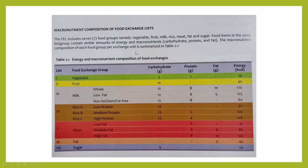Next is the macronutrient composition of the food exchange list. Our food exchange list includes the 7 food groups: vegetables, fruit, milk, rice, meat, fat, and sugar. For the vegetable group, in the previous edition there are two groups of vegetables — vegetable A and vegetable B. But in this edition, there is only one group of vegetables, so no more vegetable A and no more vegetable B.